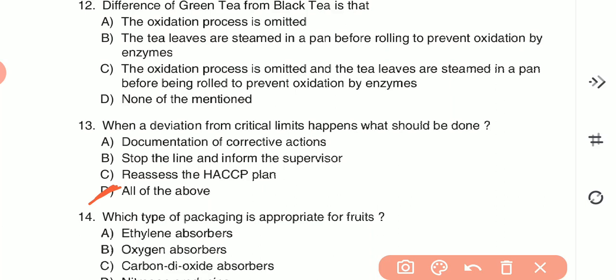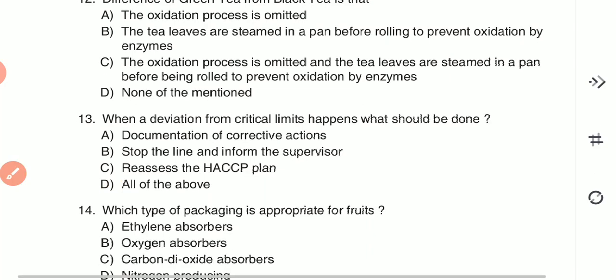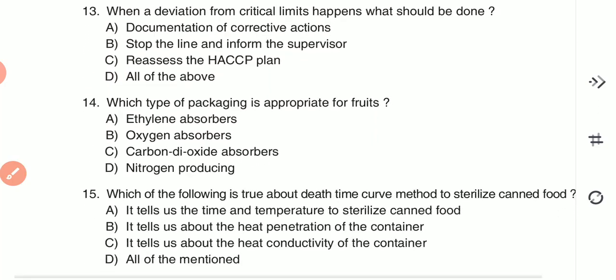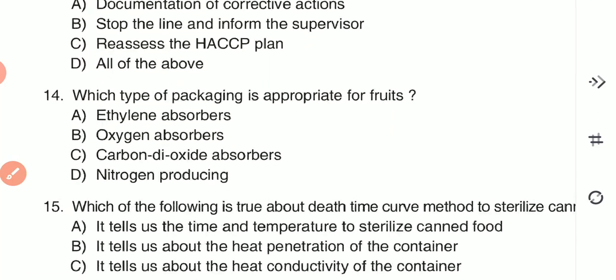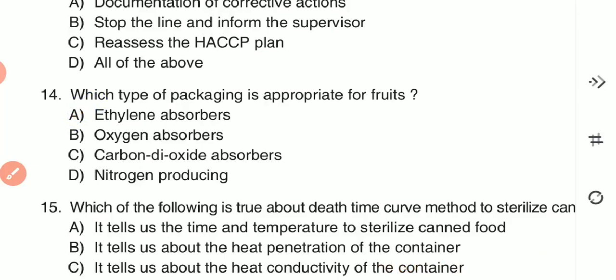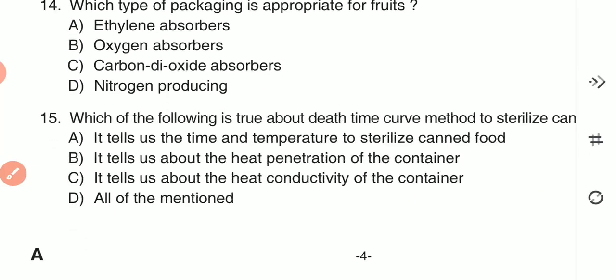Question 14: What type of packaging is appropriate for fruits? (A) ethylene absorbers, (B) oxygen absorbers, (C) carbon dioxide absorbers, or (D) nitrogen producing. For fruits, ethylene absorbers are used, therefore A is the correct answer.